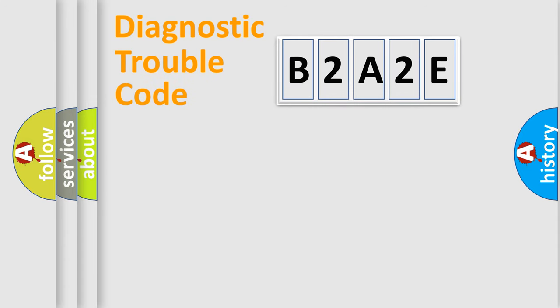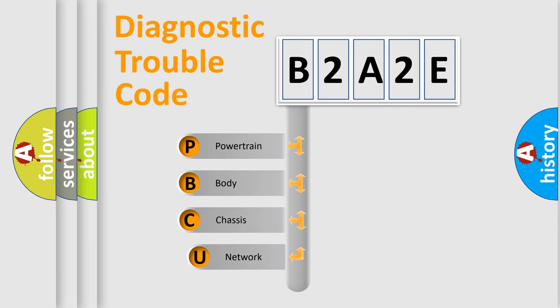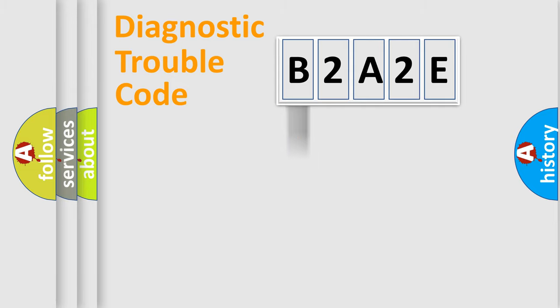Let's do this. First, let's look at the history of diagnostic fault code composition according to the OBD-II protocol, which is unified for all automakers since 2000. We divide the electric system of an automobile into four basic units: Powertrain, body, chassis, and network.